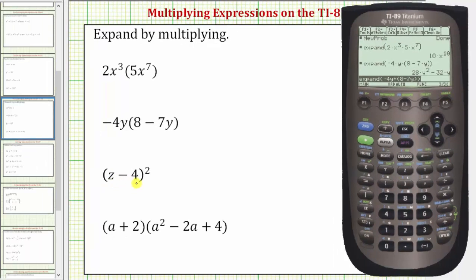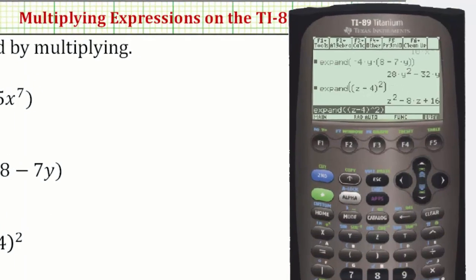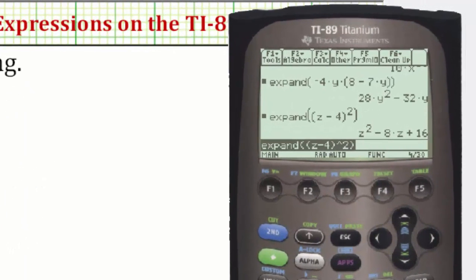Next we have the quantity z minus four squared. So F2, option three for expand. The variable z is located here. So we have open parenthesis, z minus four, close parenthesis, raise the power of two, close parenthesis, and enter. And the quantity z minus four squared is equal to z squared minus eight z plus sixteen.